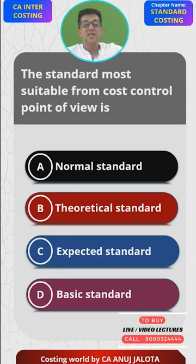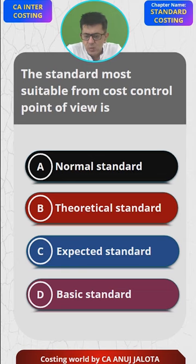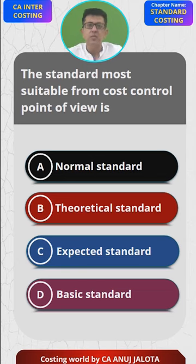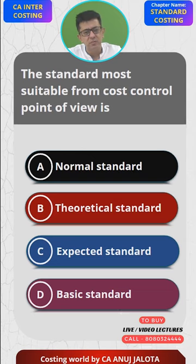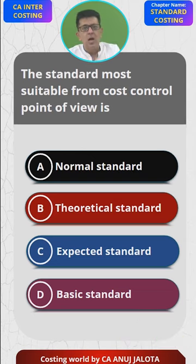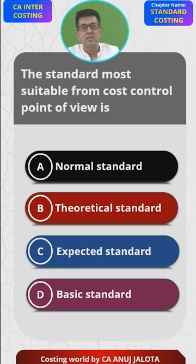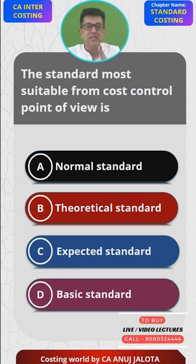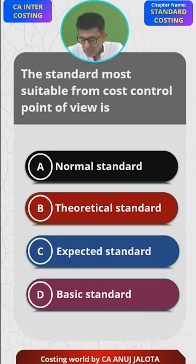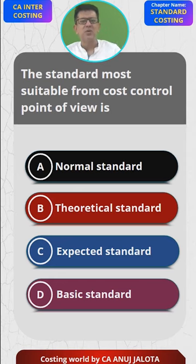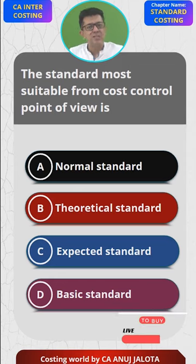Third is expected standard. Expected standard is attainable — attainable means achievable. That is, if the workers work properly, how many units can they produce? That is nothing but expected standard.